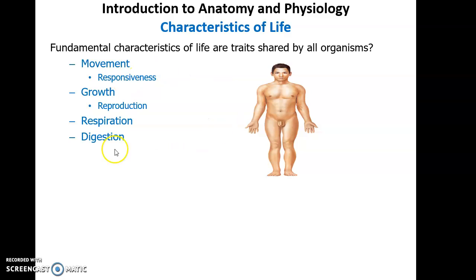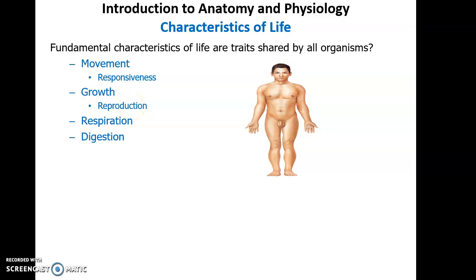Growth is where the organism gets bigger. This can occur from the production of more cells, the production of extracellular material surrounding the cells, or from the cells themselves getting bigger. So growth can occur in three main ways: more cells, bigger cells, and extra material outside of cells. Growth is linked to reproduction — on one level, producing new cells through cell division, and also producing a new organism through sex cells — sperm or oocytes — that come together to form a new organism.